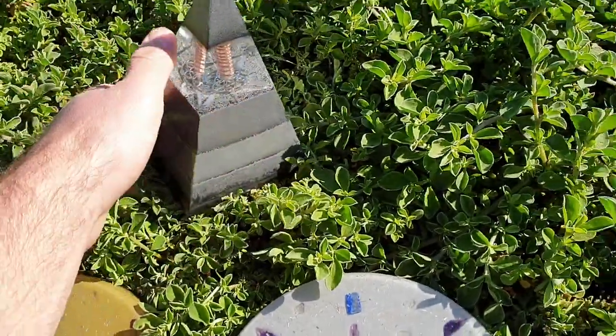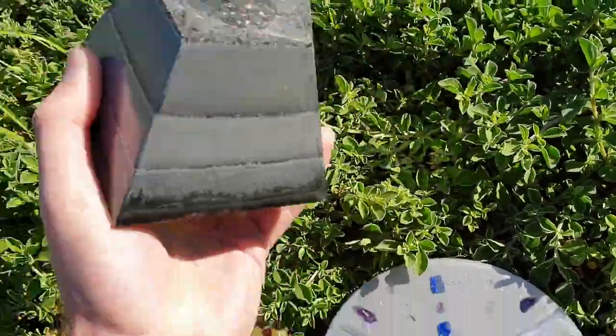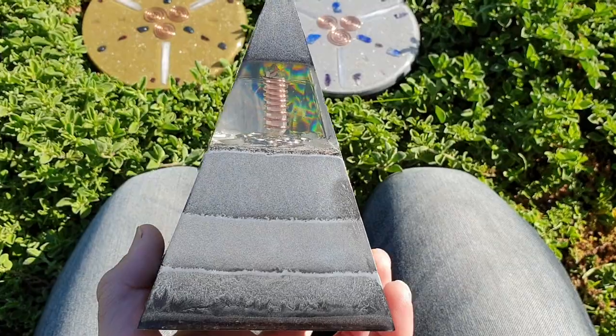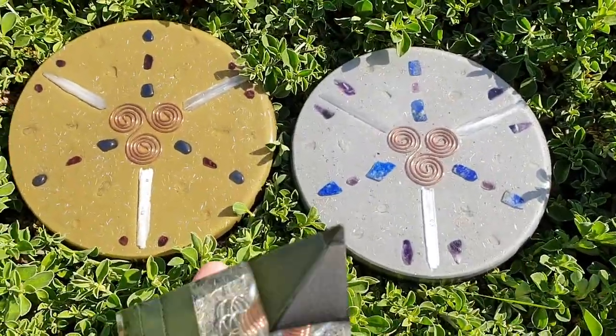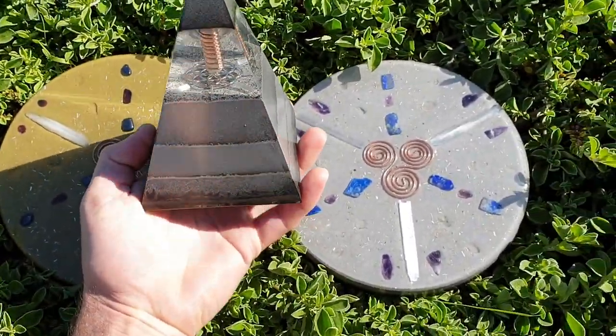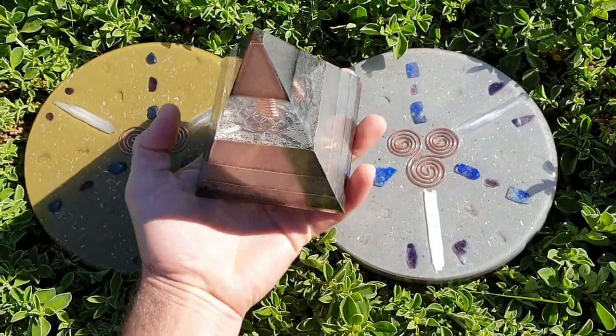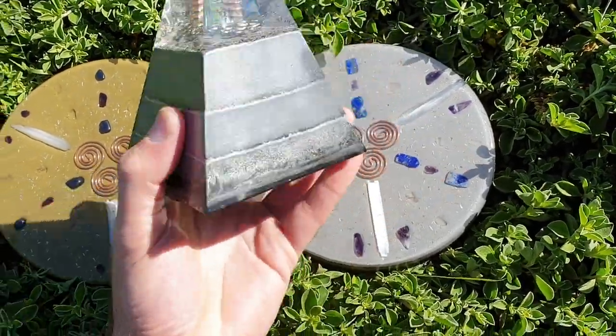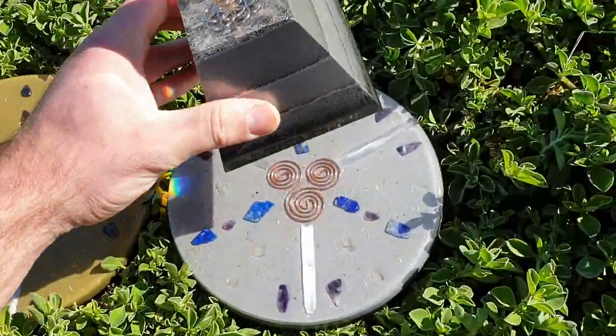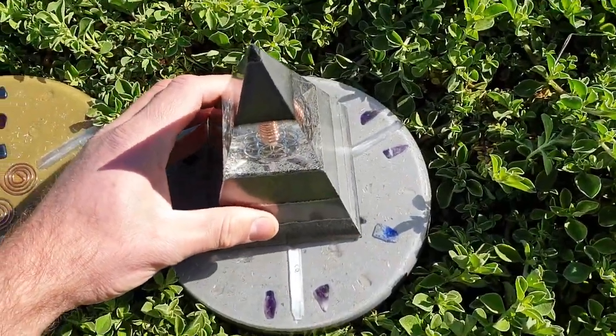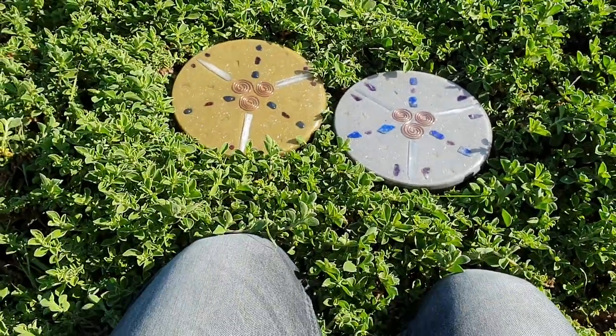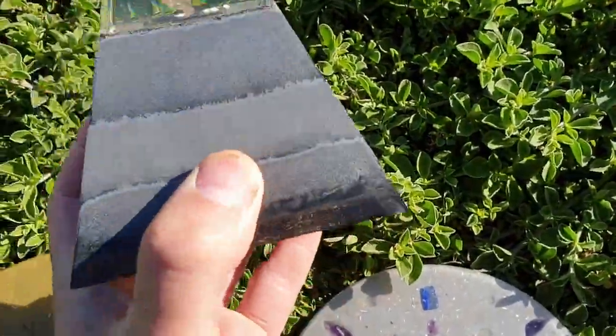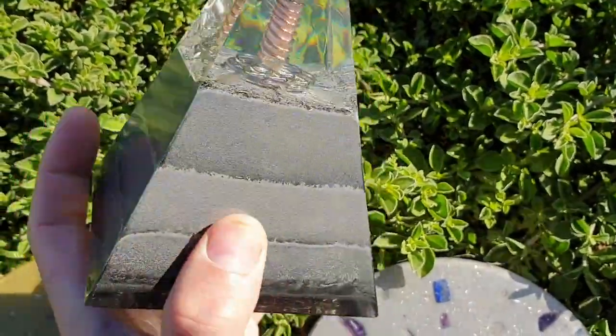Basically it's a nice looking pyramid, very strong. You can use it with these orgonite charge plates. Imagine taking this and sitting it on top and leaving that somewhere in your house. That would have some massive vibes. Very good, very cleansing, very structuring due to the fact that it is orgonite.